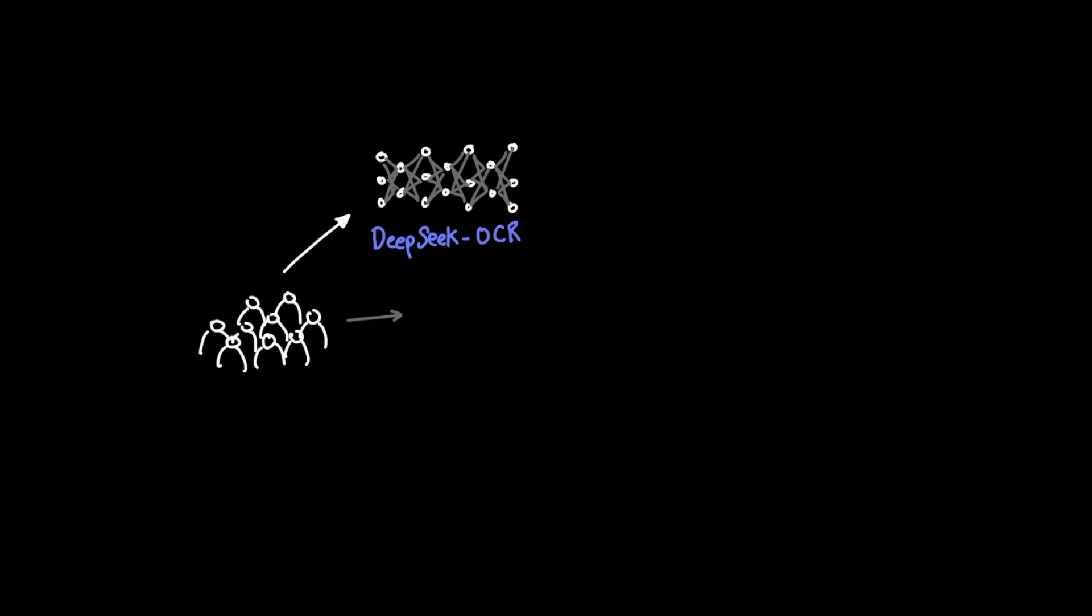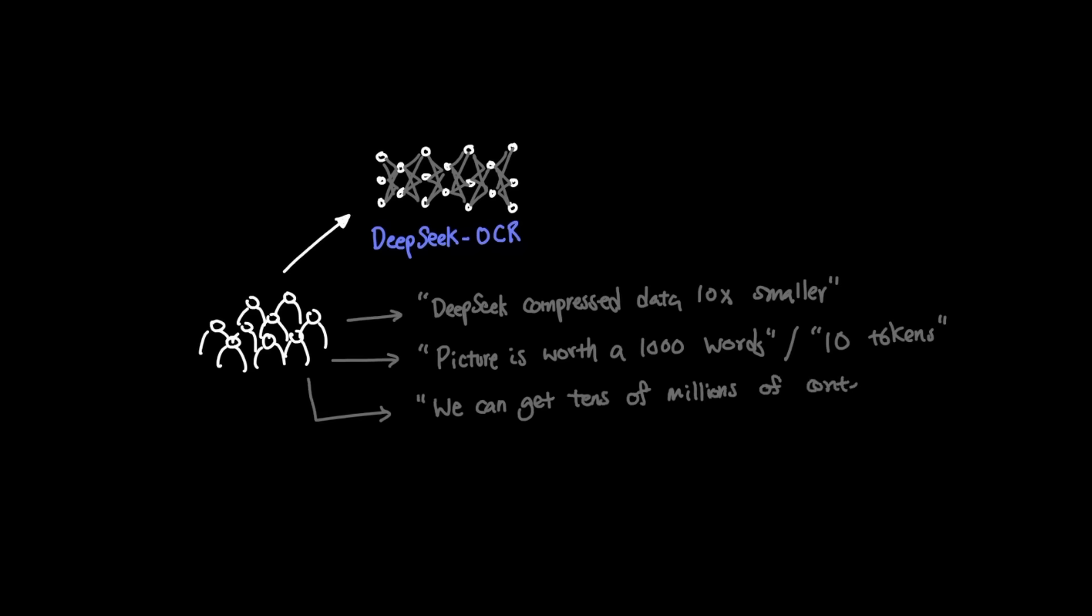One of the biggest headlines that are circulating right now around DeepSeek OCR are: DeepSeek compressed data 10 times smaller, picture is worth a thousand words or 10 tokens, and we can now easily get tens of millions of context window. So hearing all this, it seems like this OCR model is a pretty big deal. Compressing information 10 times smaller seems like a pretty incredible technological leap.